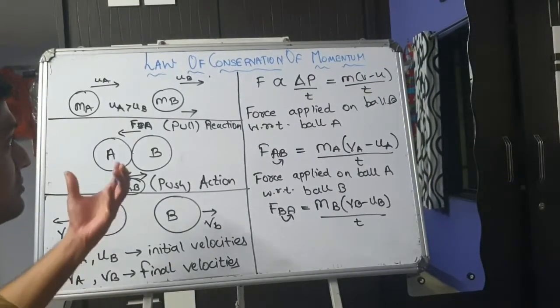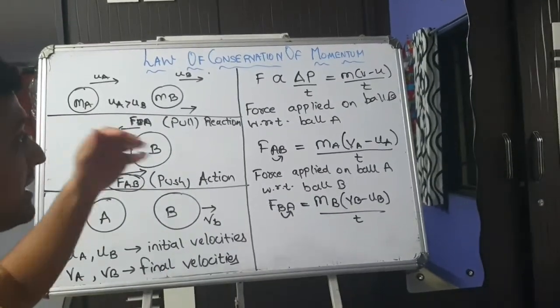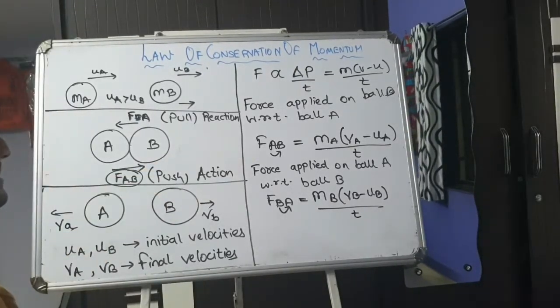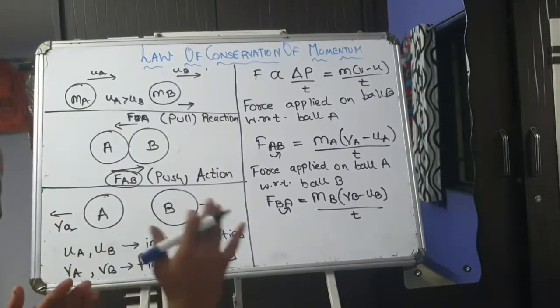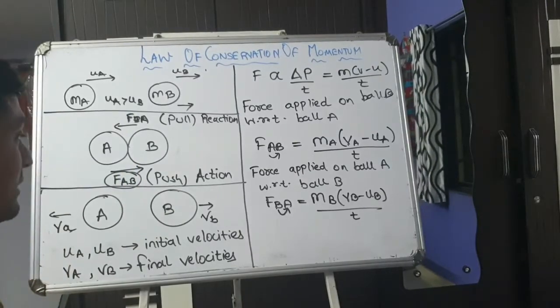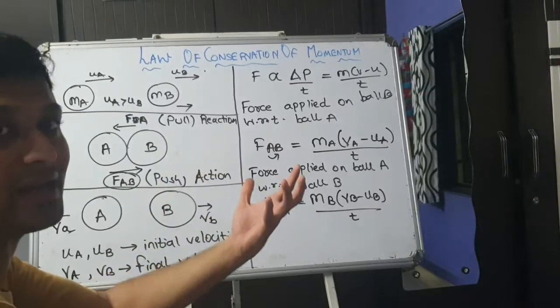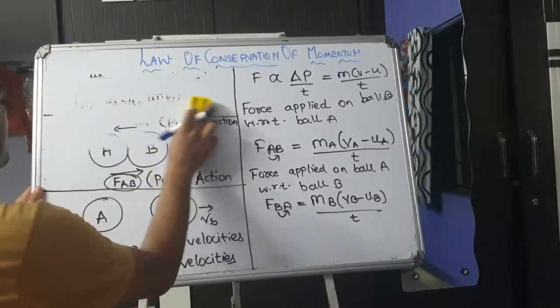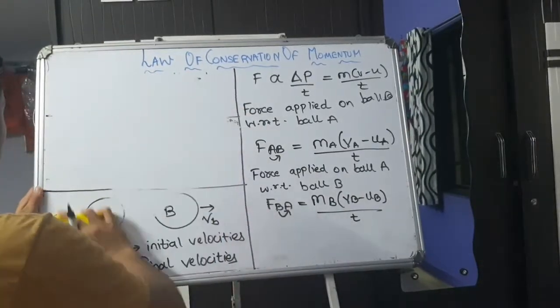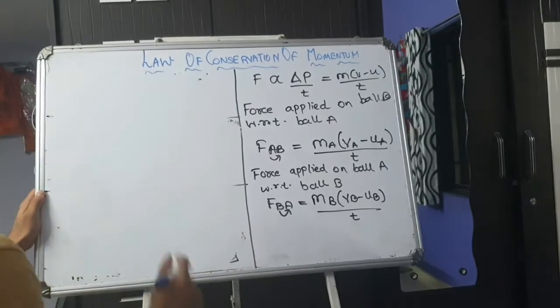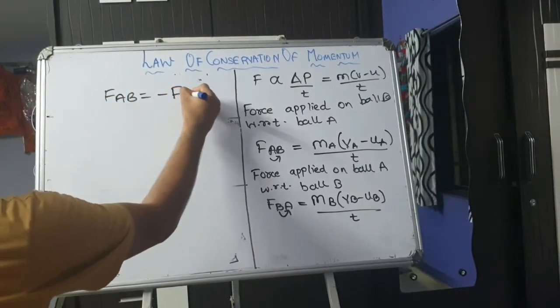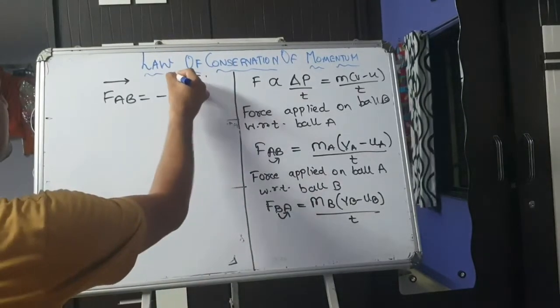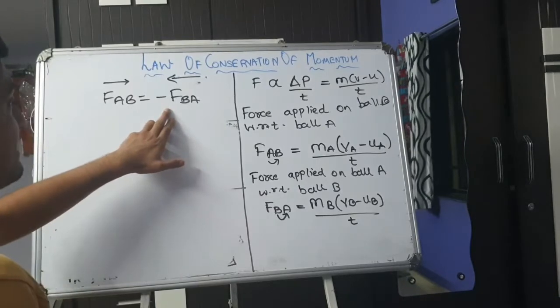Now the question comes that how to derive this law of conservation of momentum. We have considered the equation of force. We have used the equation of force. Now we will use the same result. Now see, if you consider if push action is in a positive way, then pull action will be in a negative way. Or if you consider that push is an action in a positive direction, then pull will be action in a negative direction. What it means to say is FAB will be nothing but equal to minus FBA. Because FAB is the force that is applied in this direction, and FBA is the force in opposite direction. That is why the direction is negative. That is why I have taken negative sign over here.